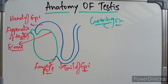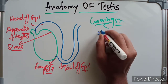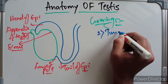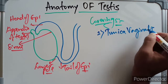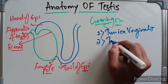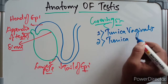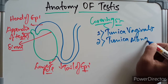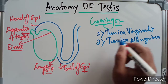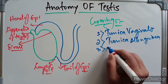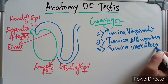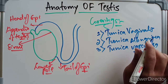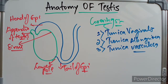The testis is covered by three layers: the tunica vaginalis, the tunica albuginea, and the tunica vasculosa.